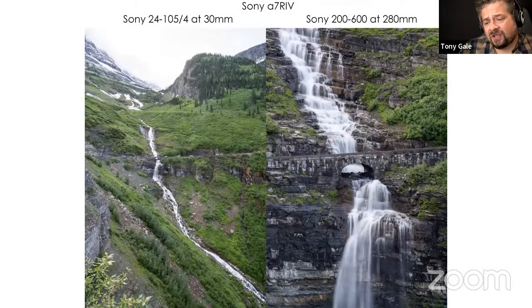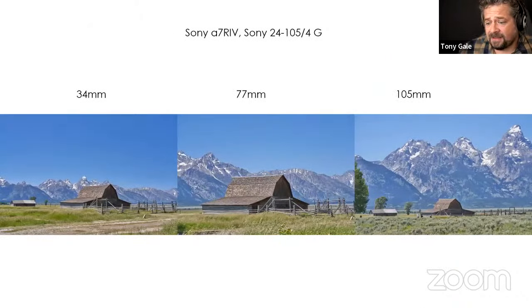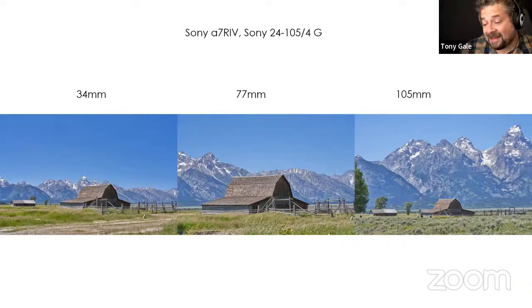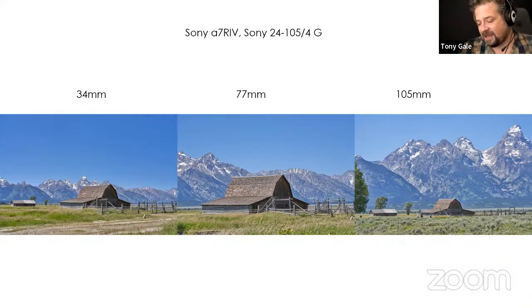On the left it's the Sony 24-105 f/4, a great walking-around lens. On the right it's the 200-600 at 280mm. Think about your lens choice and sometimes whatever you think is the right answer at the beginning is not the right answer. Here — the barn in Grand Teton at 34mm on the left, 77mm in the middle, 105mm on the right, all with the 24-105 f/4 G. I've obviously moved where I'm standing — it's not just zooming in and out, you also have to think about where you're shooting from.